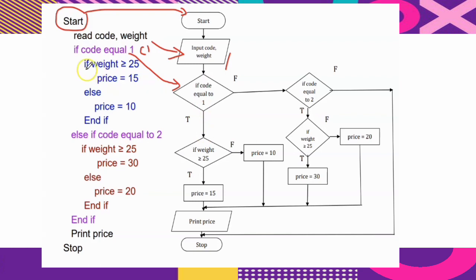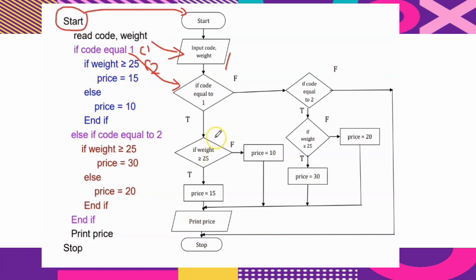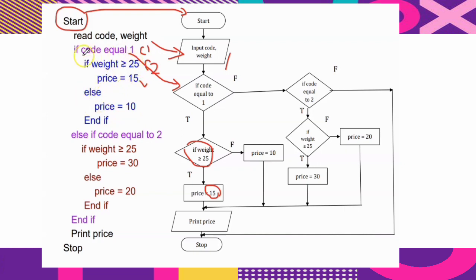If the first condition (code equal to 1) is true, the computer checks the second condition: weight greater than or equal to 25. If true, price equals 15 ringgit. If the second condition is false, else — price equals 10 ringgit.